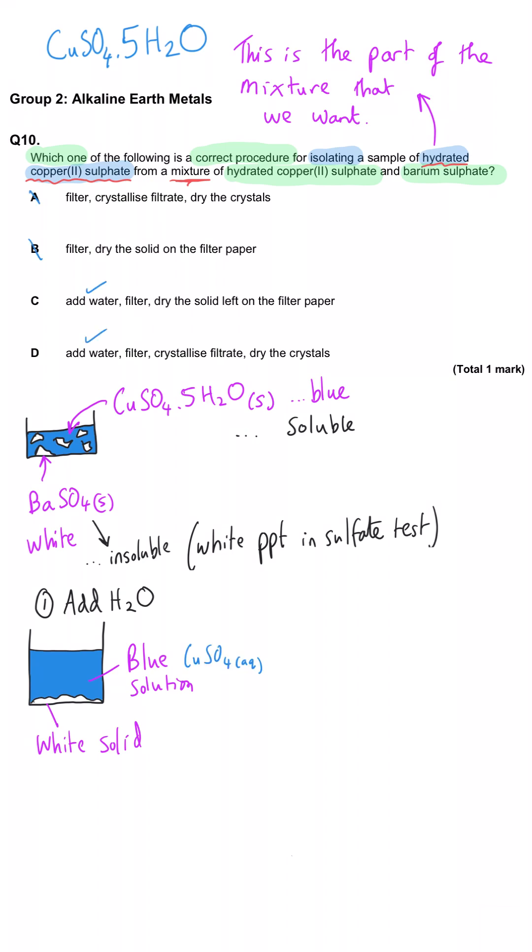So that means that C and D are our two options now. And then we need to filter out that precipitate of barium sulfate. That doesn't help us, they've both got filter for the next step. And since the copper that we want is currently in solution, we need to get that filtrate that's passed through the funnel.